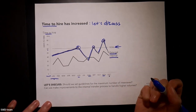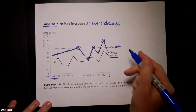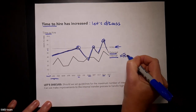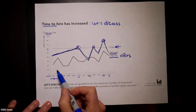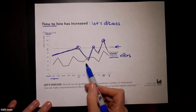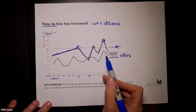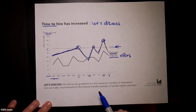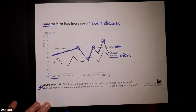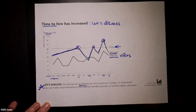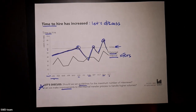We shift our attention to internal hires — those coming through internal transfers. We see it's below goal, but generally increasing over the course of the year. So with that context, we can frame the discussion we want to have. Maybe we set some guidelines around maximum number of interviews, or there might be some improvements to consider to the internal transfer process.